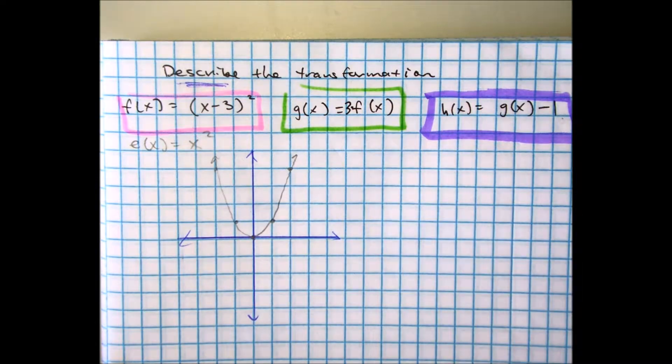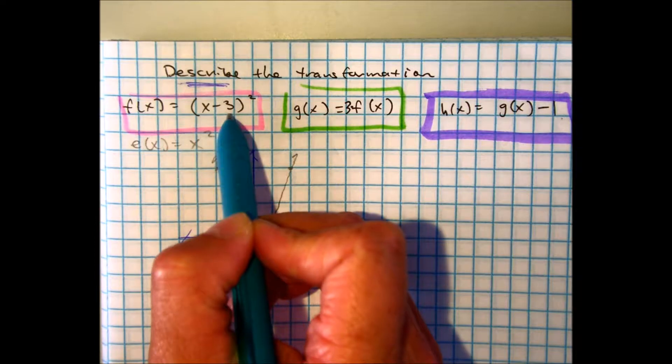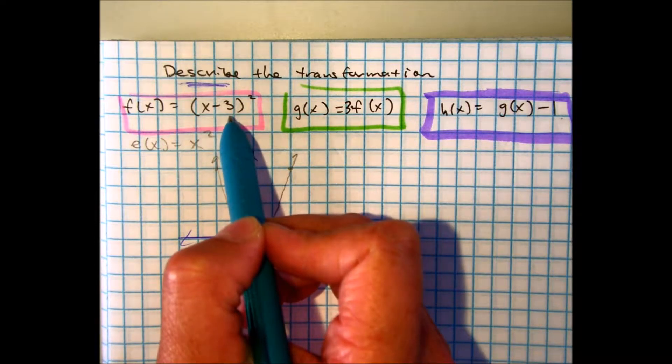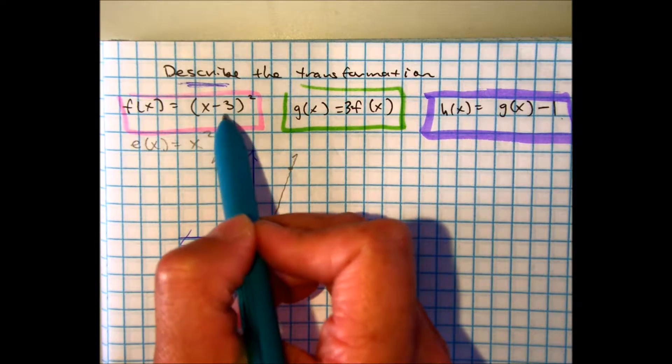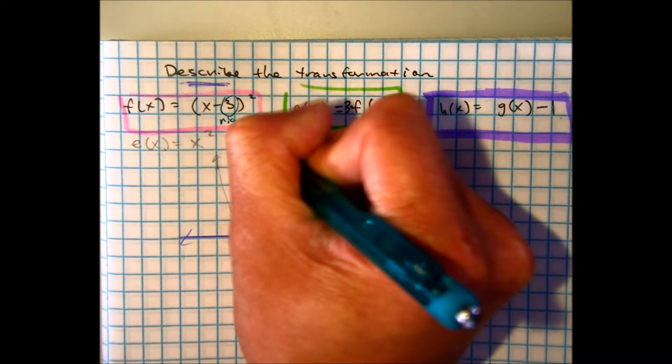But this graph tells us X minus three, so you're on the inside. Class, is that a vertical or horizontal translation? Horizontal. Is this going to go left or right? This one says right three.